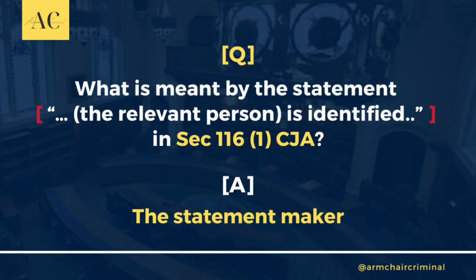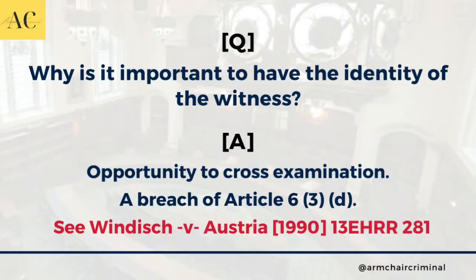What is meant by the statement — the relevant person is identified — in the Criminal Justice Act section 116 subsection 1? It means the statement maker. That is the relevant person. The philosophy behind it is why it is important to have the identity of the witness: it is to give the defendant, or the opposing party, an opportunity to cross-examine. That is to preserve Article 6.3(d) — the right to a fair trial.